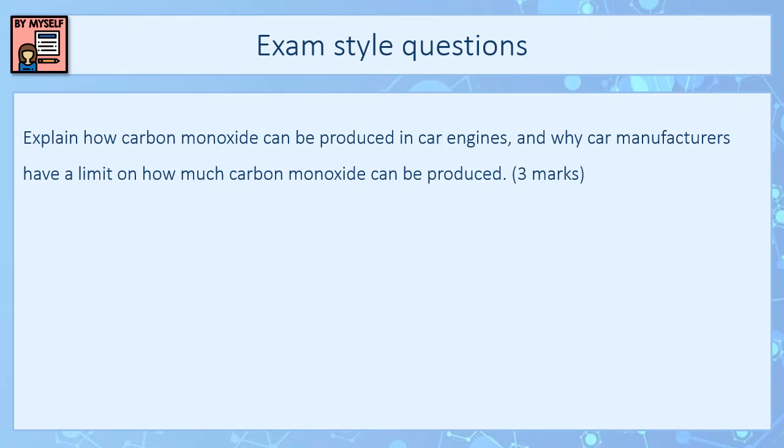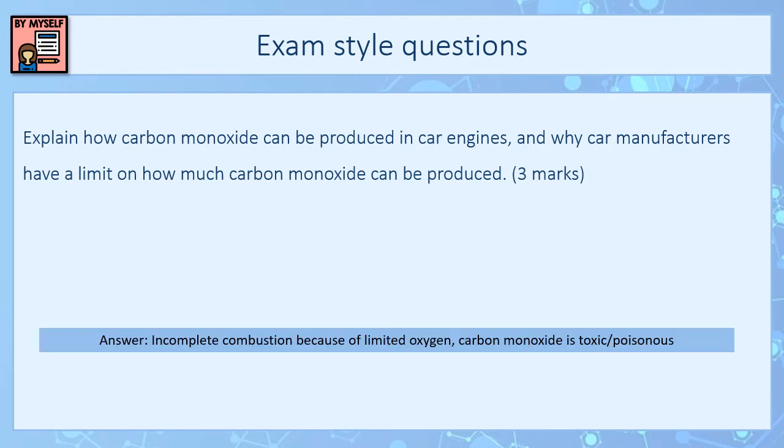We're now going to try three exam style questions. The first is worth three marks — your teacher will pause the video here and come back when you're ready. The answer is that incomplete combustion happens because of limited oxygen, and your final mark is for saying that carbon monoxide is toxic or poisonous. Remember you need to be specific with your language — words like harmful or dangerous will not get you the mark; you must write toxic or poisonous.